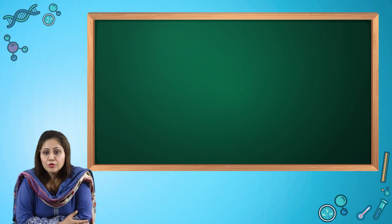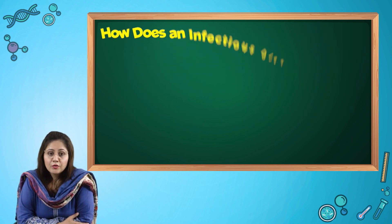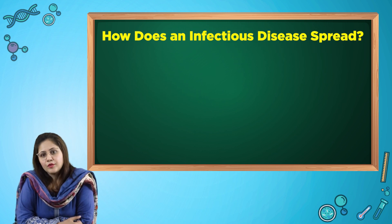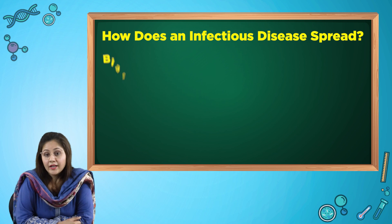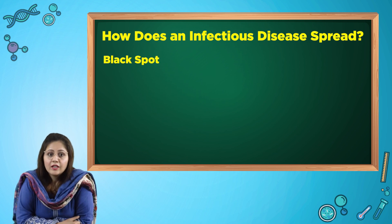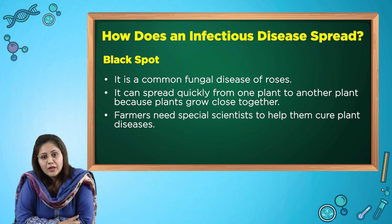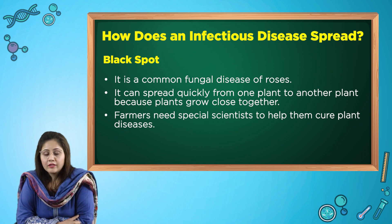Now to understand infectious diseases and how they spread, let's take an example from the plant side. We are going to talk about black spot — it is a common fungal disease of roses. It can spread quickly from one plant to another because plants grow very close together.